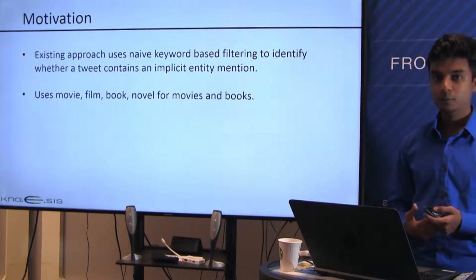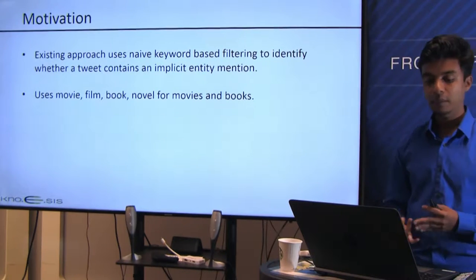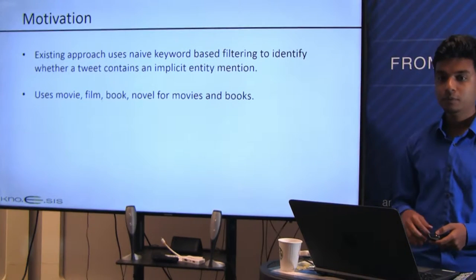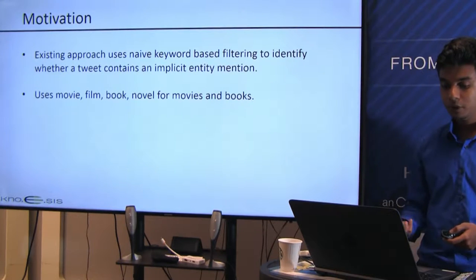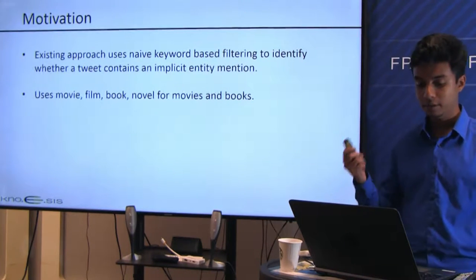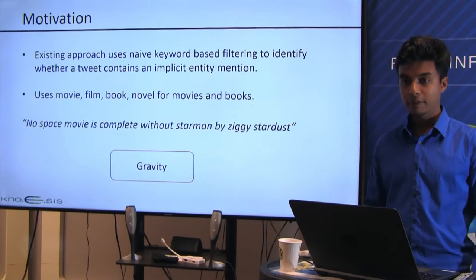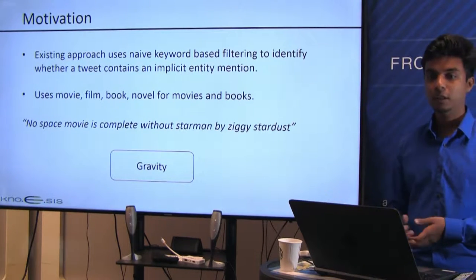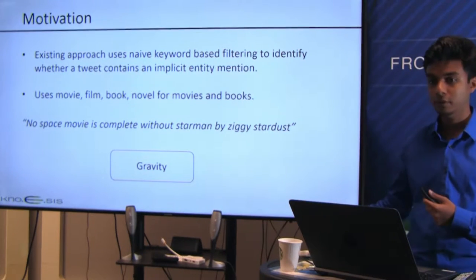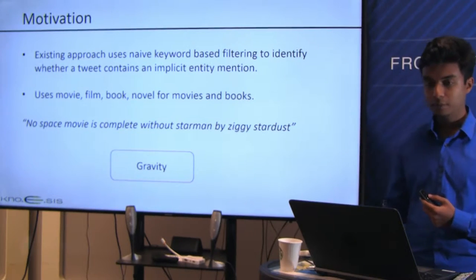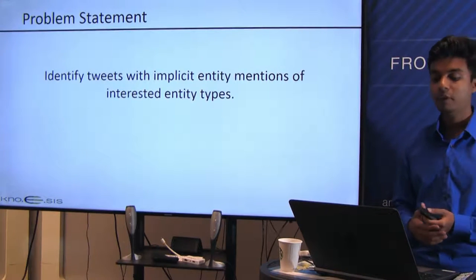However, to identify tweets with implicit entity mentions, he used a naive keyword-based filtering approach — using keywords like 'movie' and 'film' for movies, and 'book' and 'novel' for books. This can lead to problems. For example, 'No space movie is complete without Starman by Ziggy Stardust' does not have any implicit entity mention, but the algorithm would incorrectly link it to the movie Gravity. To solve this, we defined the problem of identifying tweets with implicit entity mentions of interested entity types.